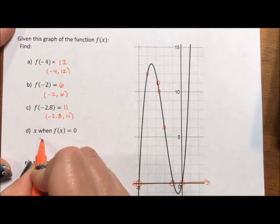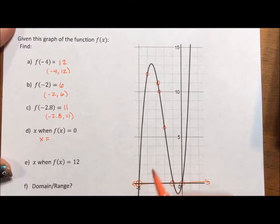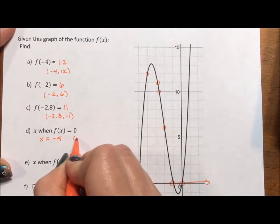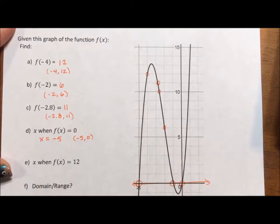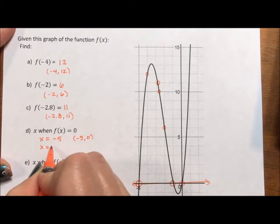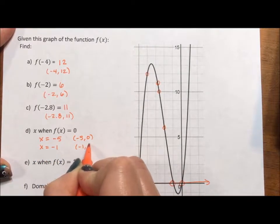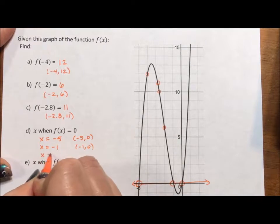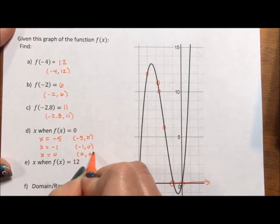So x can equal negative 5, meaning negative 5, 0 is a point on the graph. x could equal negative 1, meaning negative 1, 0 is a point on the graph. Or x could equal 0, meaning 0, 0 could be a point on the graph.